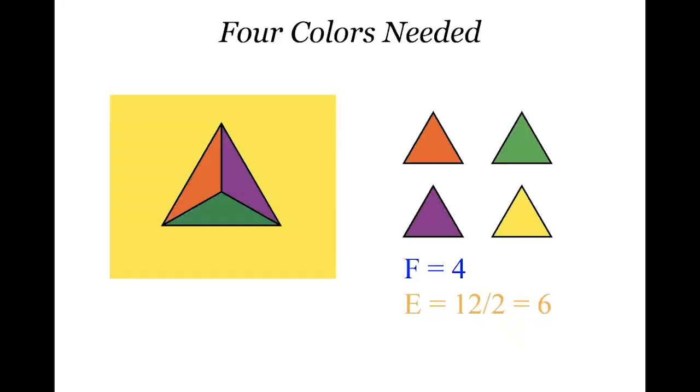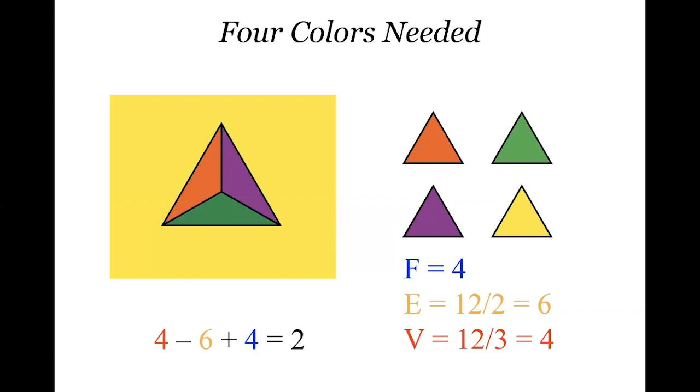There are three triangles at each corner, so the total number of vertices is: four triangles times three vertices each equals 12, but each vertex is counted three times, so the total number of vertices is 12 divided by 3, which is four. And sure enough, here we have one, two, three, and four vertices. If we compute V minus E plus F for this: 4 minus 6 plus 4 equals 2. Good — we get two.